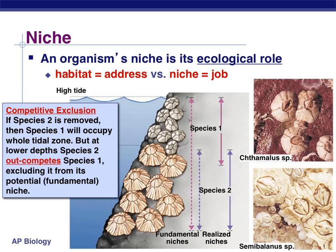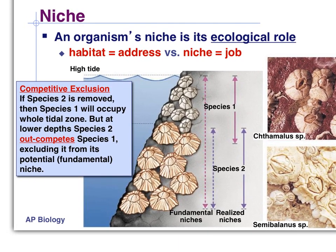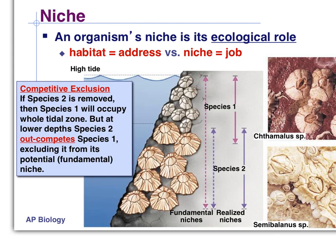When we talk about niches, we always have to link it to a term called competitive exclusion. Competitive exclusion is where two species literally compete for something they have in common. Here's an example using two species of clams. Note that species one can live from the high tide region all the way down to a lower region — that range is called its fundamental niche. If found there, it would be perfectly happy and can exist there quite easily.